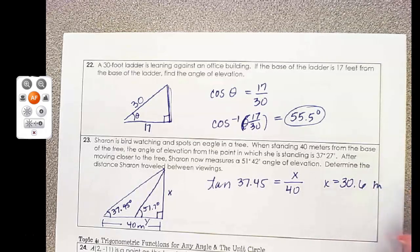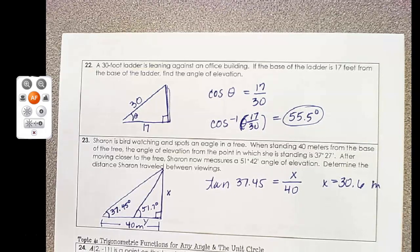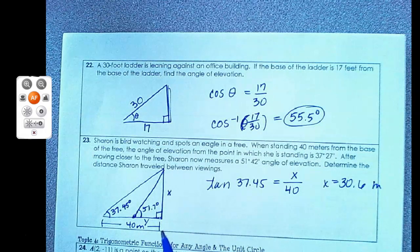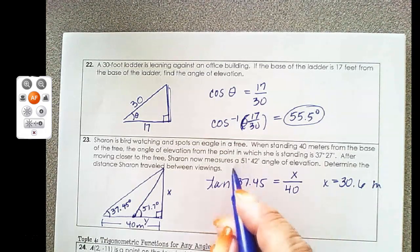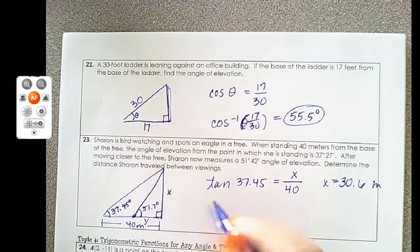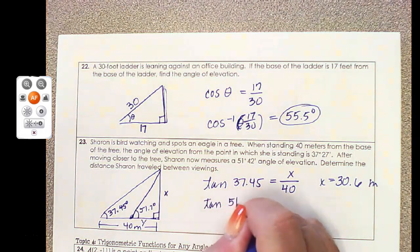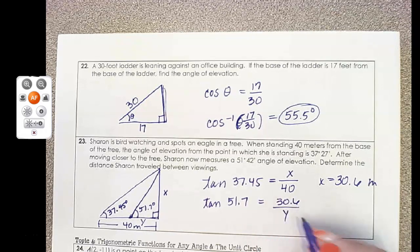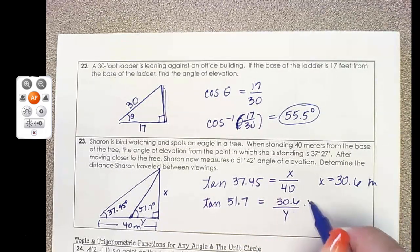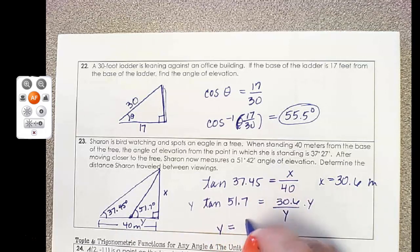So the thing that doesn't change between her two situations is the height of the tree. So I am going to use a tangent to go ahead and find the height of the tree. So the tangent of 37.45 is opposite over adjacent, or x over 40. So when I solve that out, I get x equals 30.6 meters. Now if I know the height of the tree, I can find the distance from her second viewing point to the top of the tree. So I can set up another tangent equation. And that is going to be tangent of 51.7. And instead of an x here, I know what x is now. It's 30.6 divided by y. And so I multiply by y on both sides. Divide through by tangent of 51.7. And I get y equals 24.2.